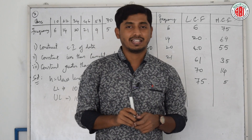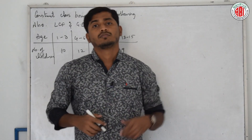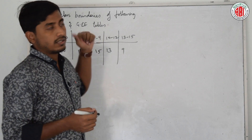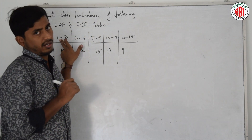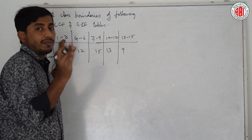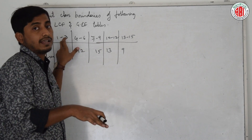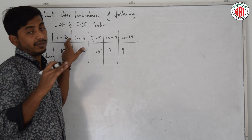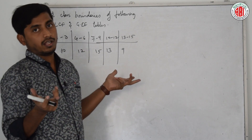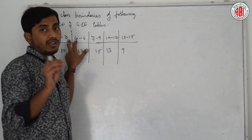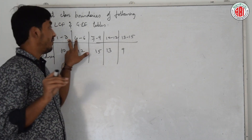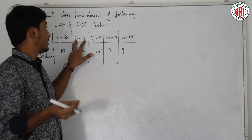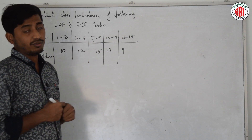Shall we look at the next problem? He is asking us to construct class boundaries. What are class boundaries? Till now, if there was a single number we wrote it as is. Now, boundaries means the number just before a value — for example, just before 1 is 0.5. Just after 3 is 3.5. So between 3 and 4, the boundary is 3.5. That is why we take the class as 0.5 to 3.5, then 3.5 to 6.5.